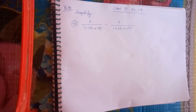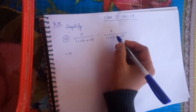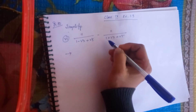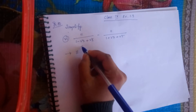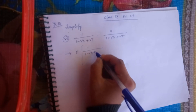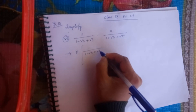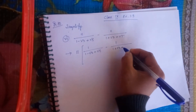Class 9, Exercise 1.3, number 10. We need to simplify. The expression is: 1 divided by (1 minus root 3 plus root 5) minus 1 divided by (1 plus root 3 plus root 5).